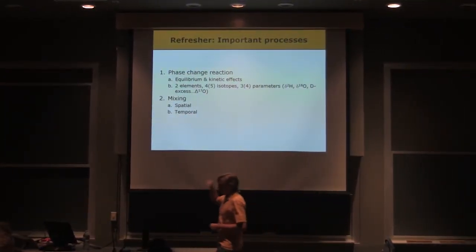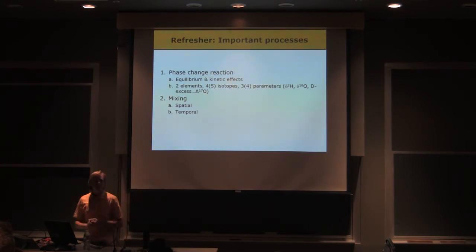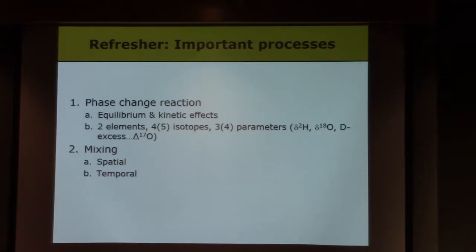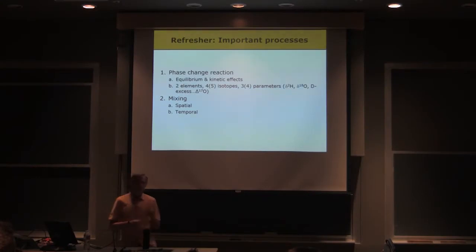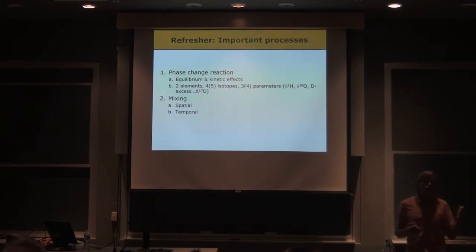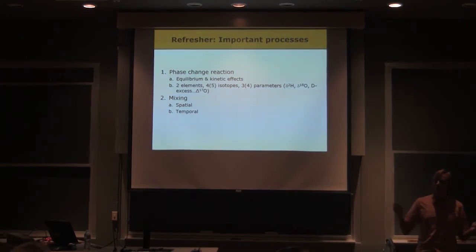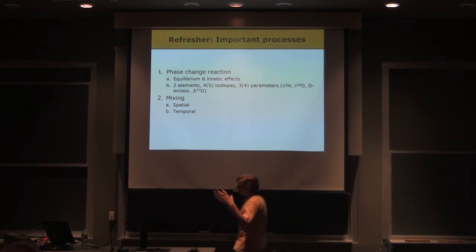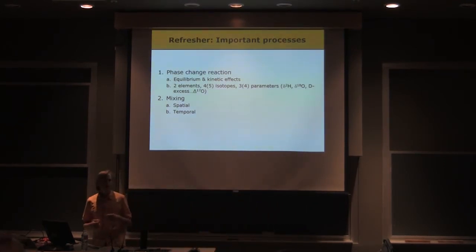We can also add in this parameter capital Δ17-O, oxygen-17 excess, which is kind of analogous to deuterium excess. And again, I'm not going to talk about it, but I think it will come back. The second process that we have that we can really think about is mixing. And so, this comes back to the source signature. Where, what's the source of the water that we've sampled? And we can think about this in many different ways. Where is it coming from spatially, temporally? Like, when did that water fall out of the sky, or when was it taken up by a tree. Jim will get into some of that stuff, but we can look at mixing, and we can look at these phase change reactions. These are the two things that kind of really set the isotope compositions.